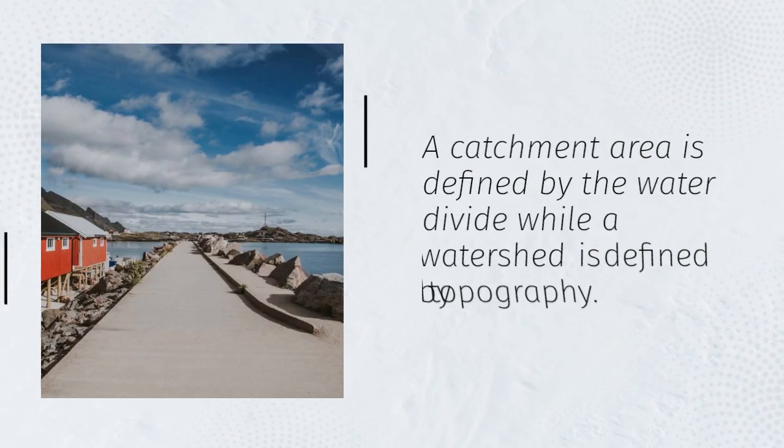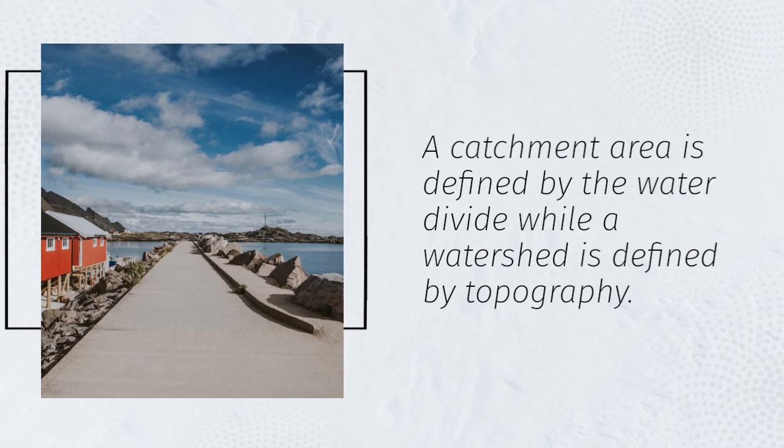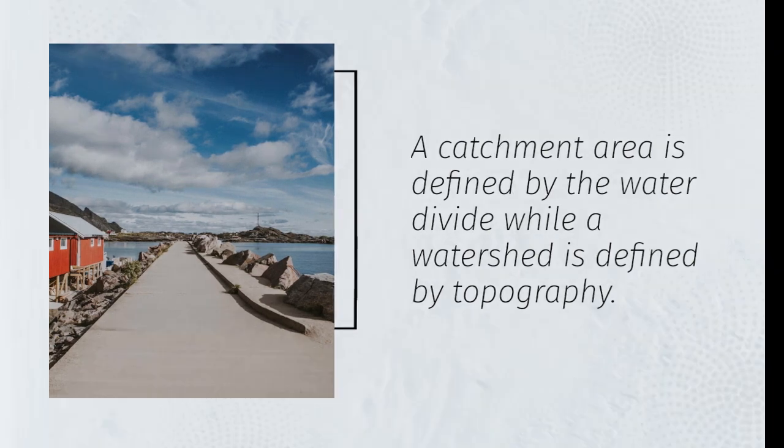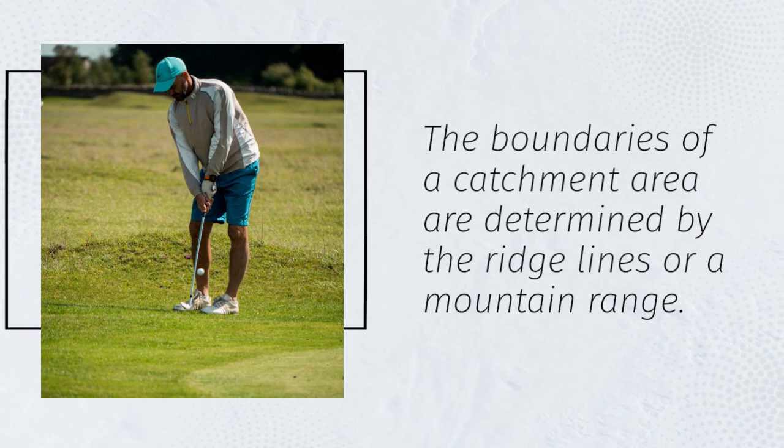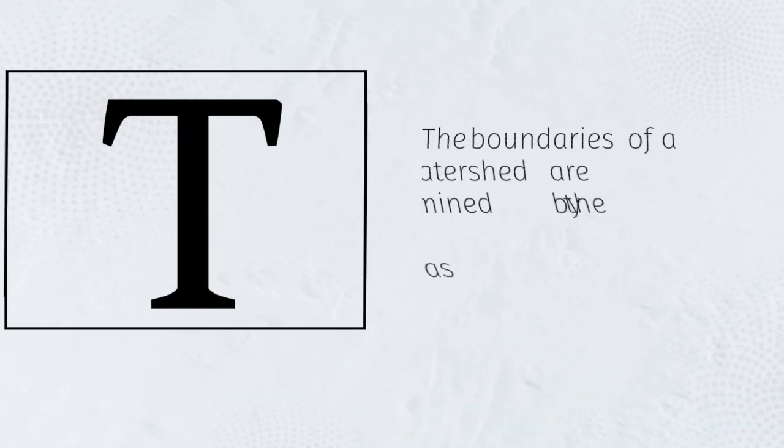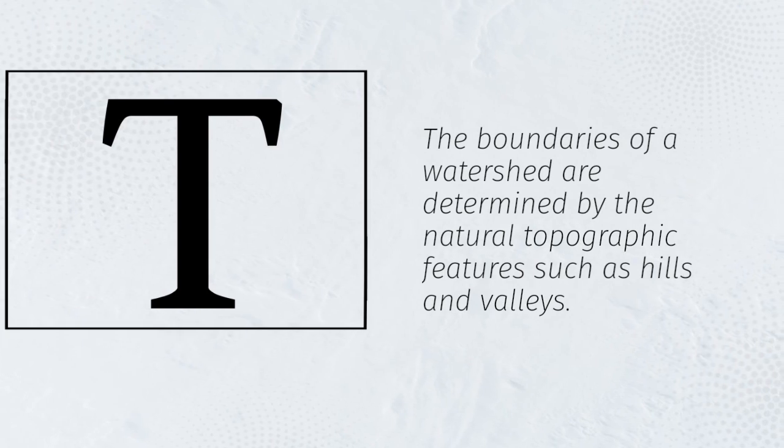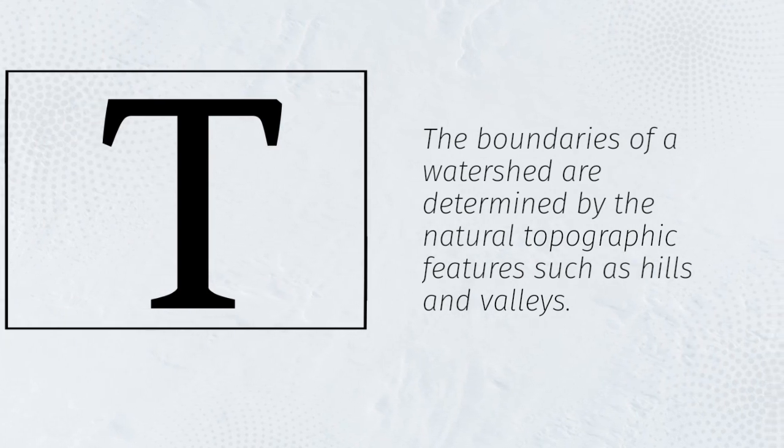A catchment area is defined by the water divide while a watershed is defined by topography. The boundaries of a catchment area are determined by the ridge lines or a mountain range. The boundaries of a watershed are determined by the natural topographic features such as hills and valleys.